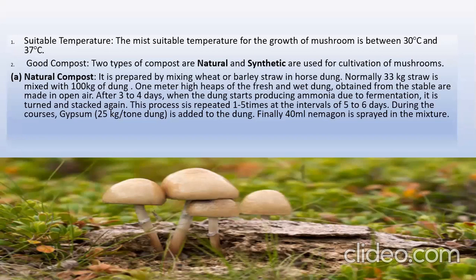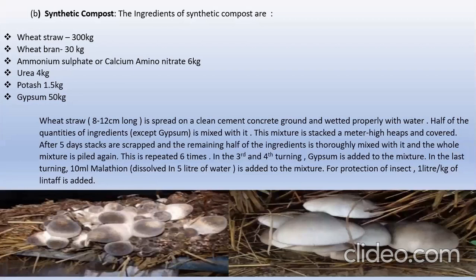Now, good compost. Two types of compost are used for cultivation of mushrooms: natural and synthetic. Natural composts are made by mixing wheat or barley straw in horse dung. Normally 33 kg straw is mixed with 100 kg of dung. Ingredients of synthetic compost: wheat straw 300 kg, wheat bran 30 kg, ammonium sulfate 6 kg, urea 4 kg, potash 1.5 kg, gypsum 50 kg, and lindane is used as pesticide.